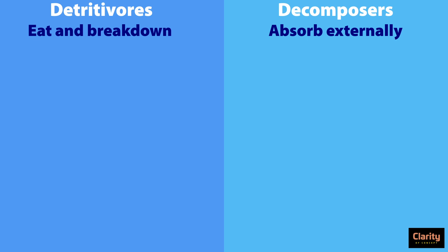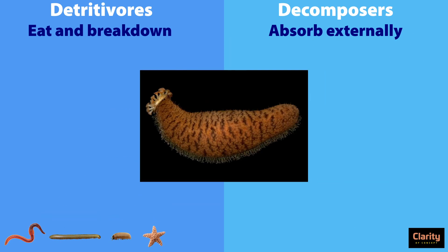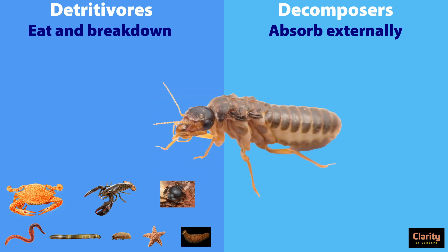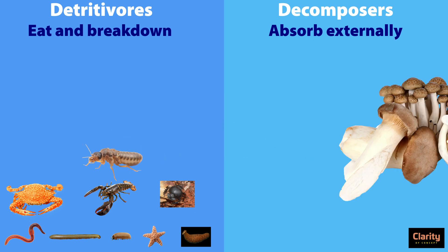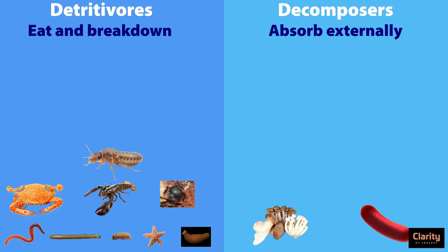Detritivores eat and break down dead organic material; they cannot absorb externally. Examples of detritivores include earthworms, millipedes, wood lice, sea stars, sea cucumbers, crabs and lobsters, dung beetles, and termites. Examples of decomposers are fungi including mushrooms, and bacteria. Another term for decomposers is saprotrophs — they are nothing but decomposers such as mushrooms and bacteria. Another term for decomposers is osmotrophs. More examples with images are given in a PDF available in our Telegram channel; link is in the description box below.